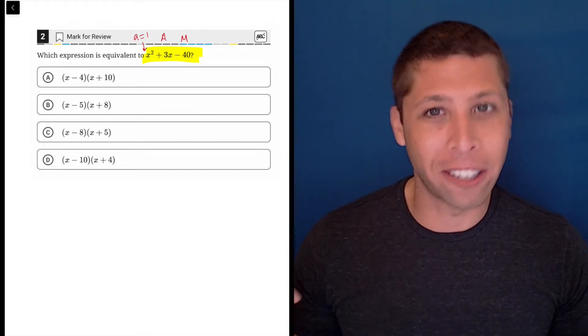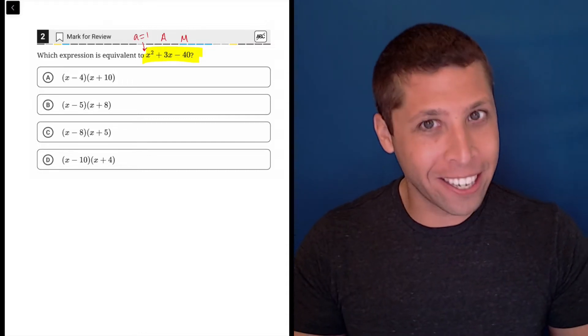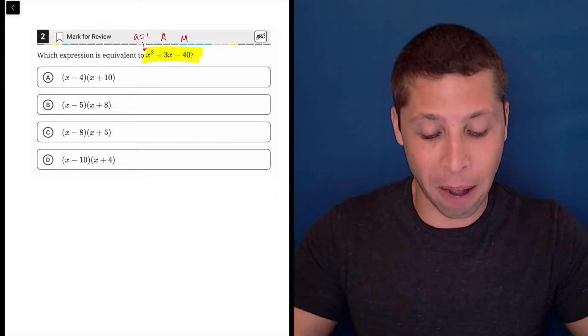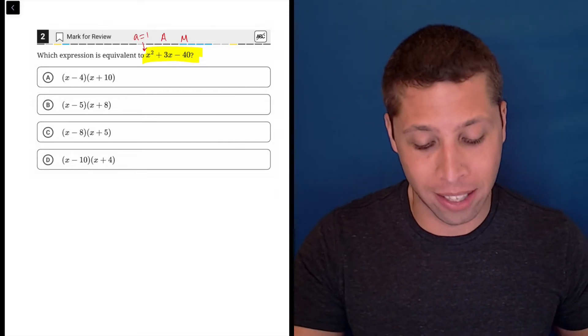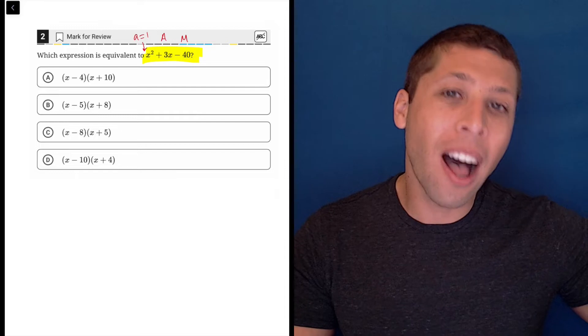Which letter comes first in the alphabet? A does. So addition is going to come first when we go through this factoring process. However, when I'm trying to solve and factor, I'm much more focused on the negative 40.